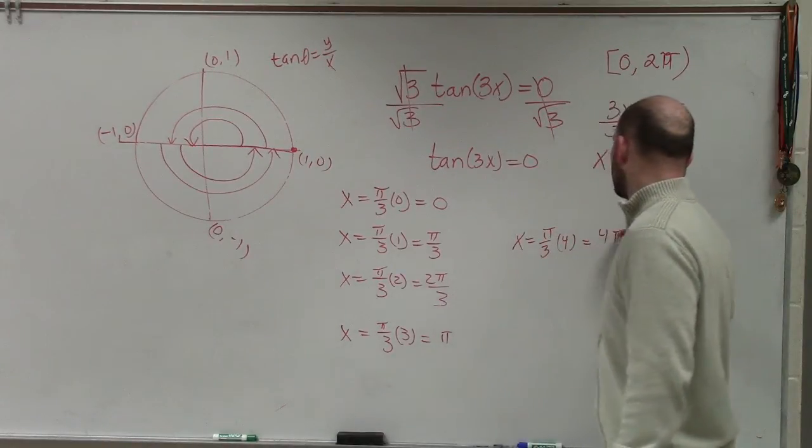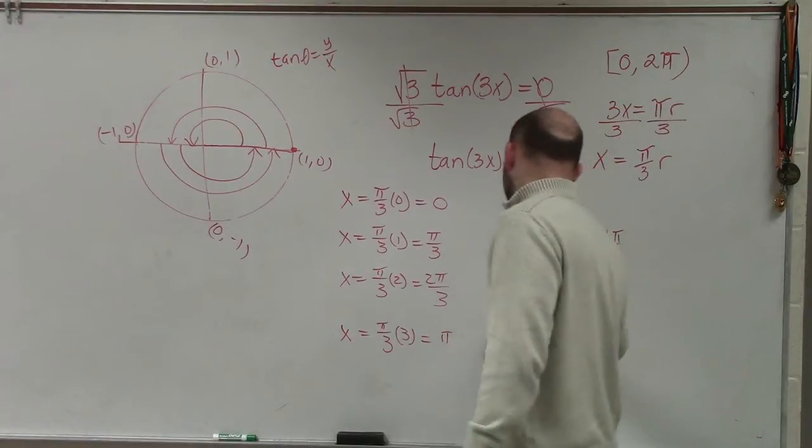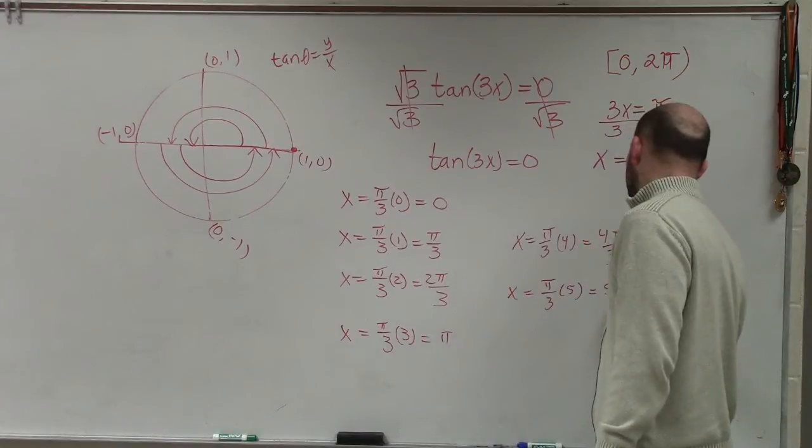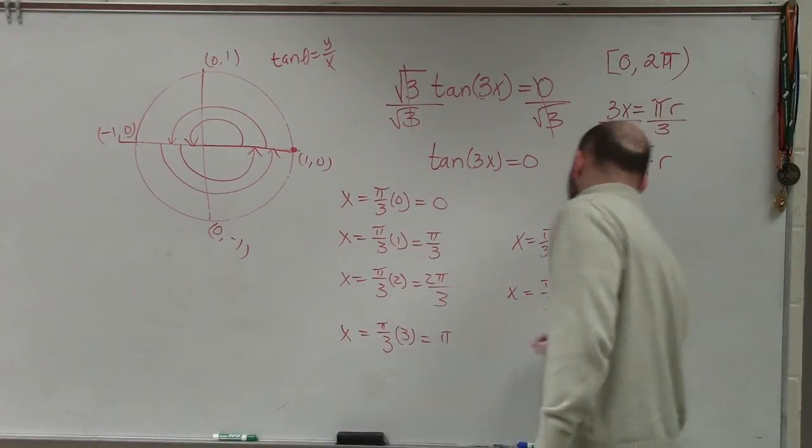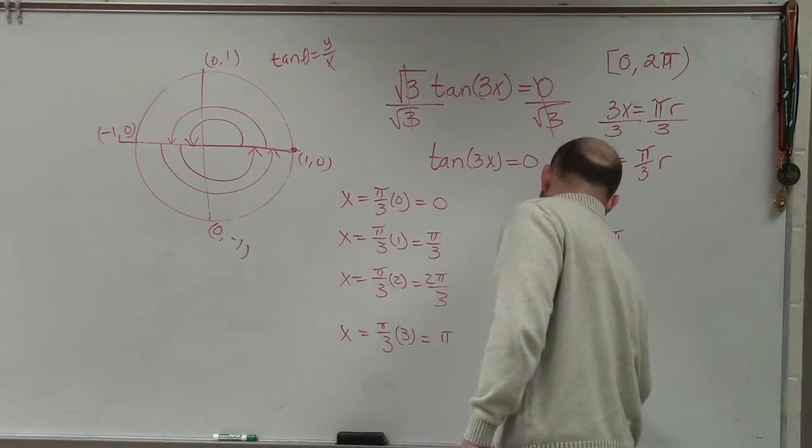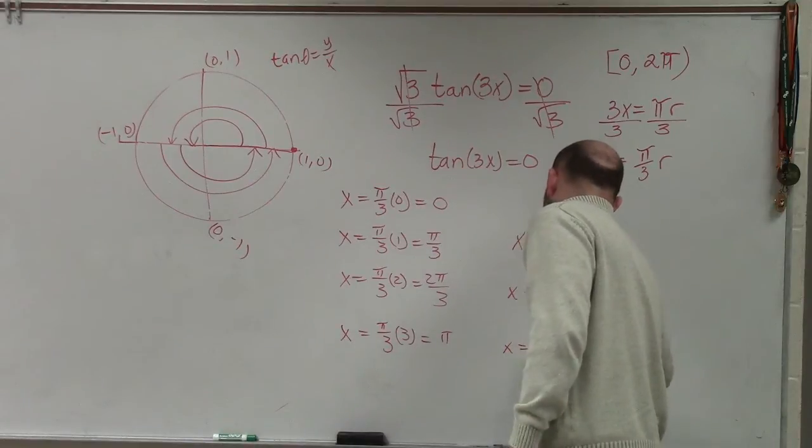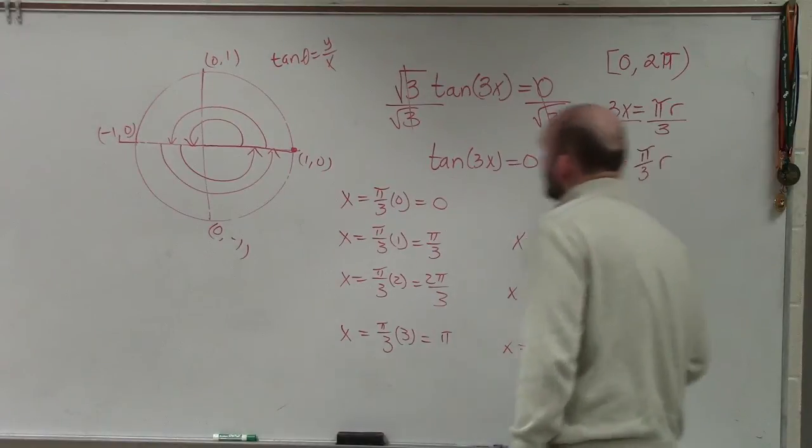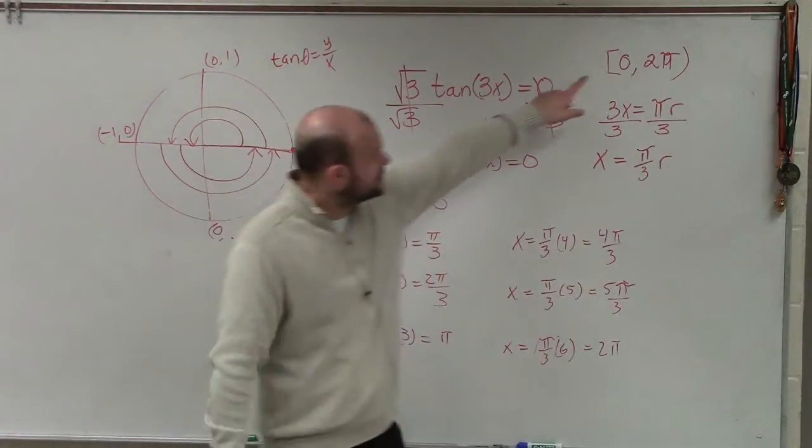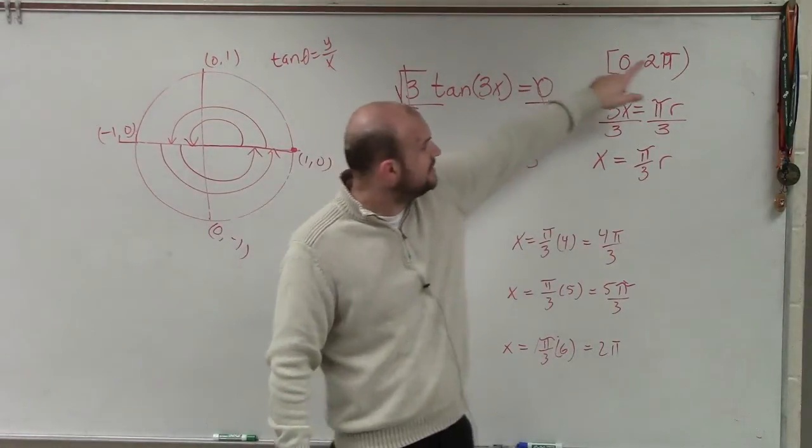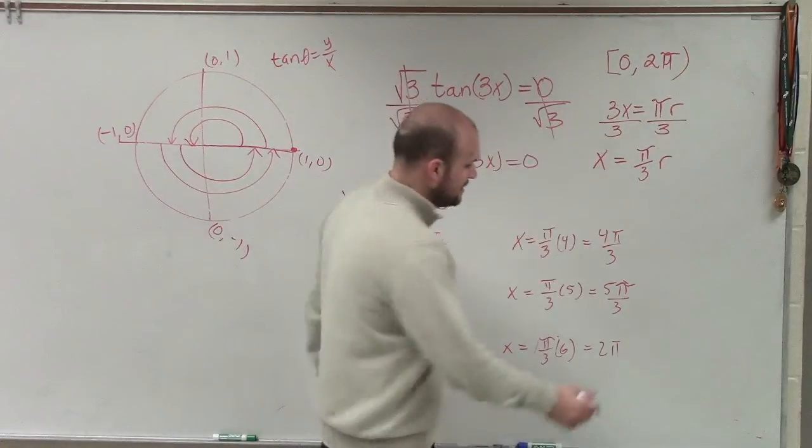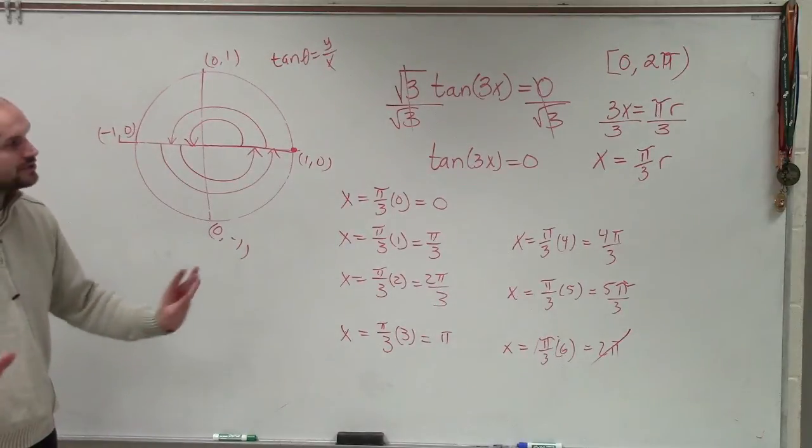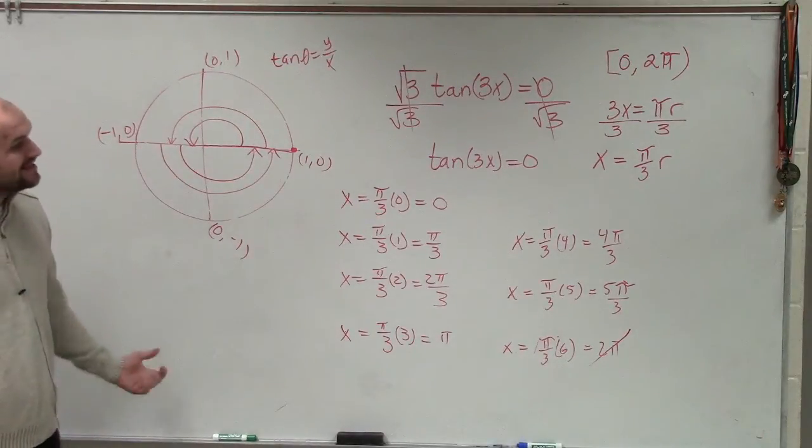And what about if it equals 6? Then that's 2π. However, if you look at that, our solution contains the solution 0, it does not contain 2π. So therefore, that's not going to be within the solution of 0 and 2π. We don't include the 2π per our solution request.